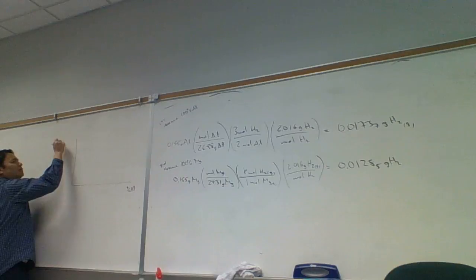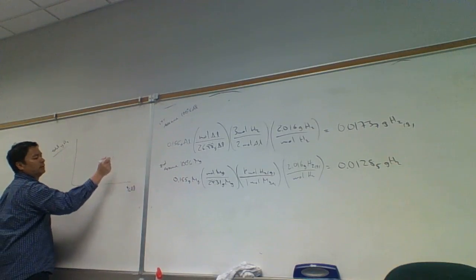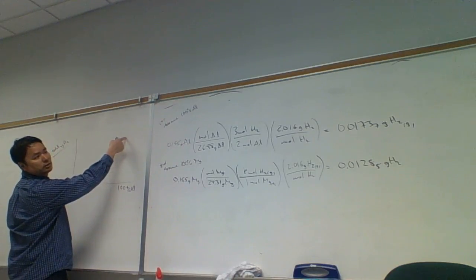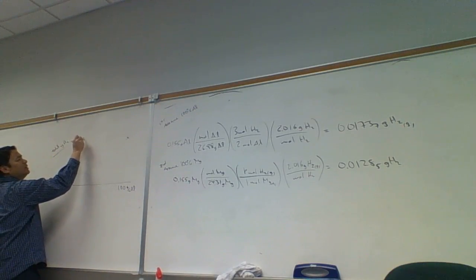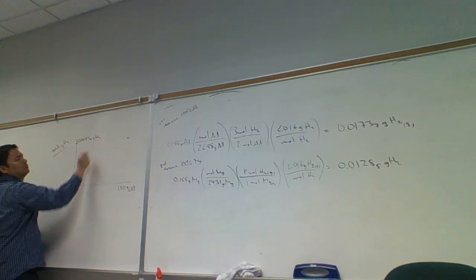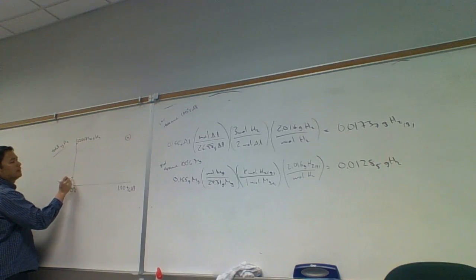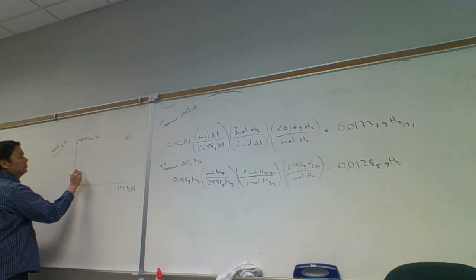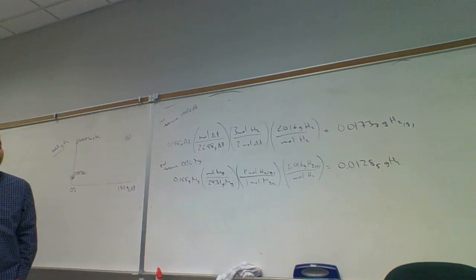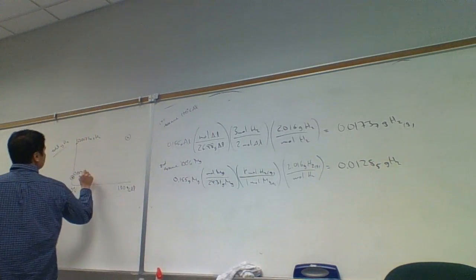If I write the total grams of hydrogen on the y-axis — that's from both aluminum and magnesium — if it's 100% aluminum I'll get 0.01737, and if it's 0% aluminum I'll get 0.01285 grams of hydrogen. This is a linear relationship since there are no squares or anything else.